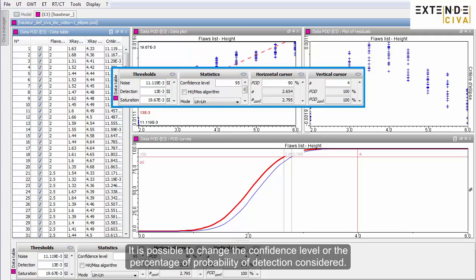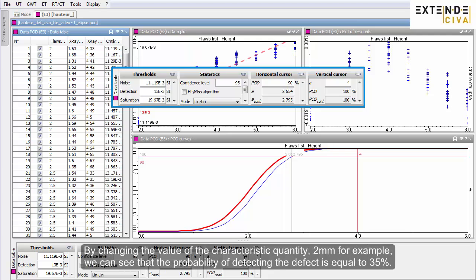It is possible to change the confidence level or the percentage of probability of detection considered. By changing the value of the characteristic quantity, 2 mm for example, we can see that the probability of detecting the defect is equal to 35%.